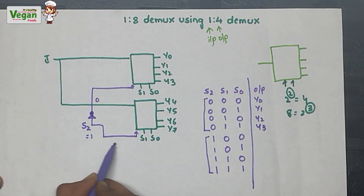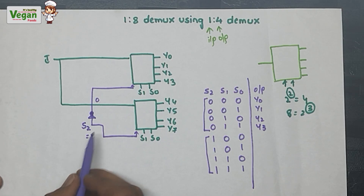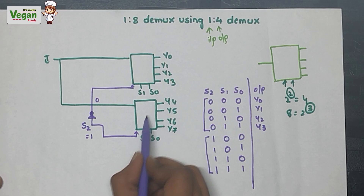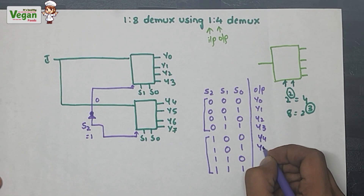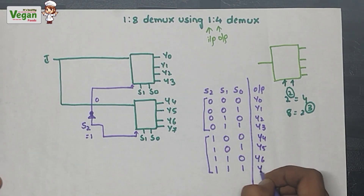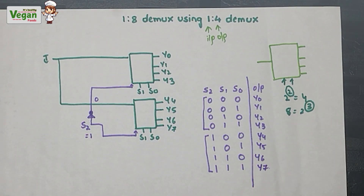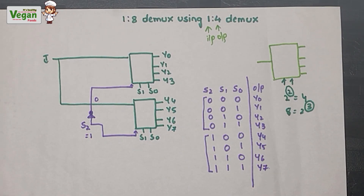When S2 = 1, outputs Y4, Y5, Y6, and Y7 are activated — covering the remaining four combinations. This gives us all eight outputs from Y0 to Y7. I hope you understood the concept of designing a 1-to-8 demux using two 1-to-4 demux units. If you have any doubts, please comment below. If you liked the video, please subscribe for more engineering related topics. Thank you.